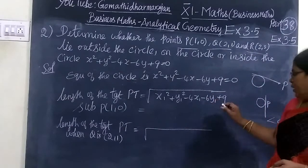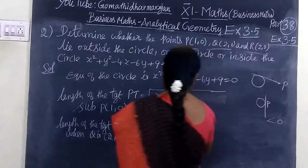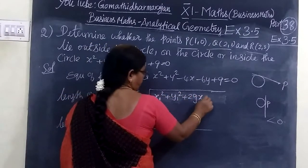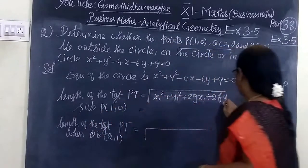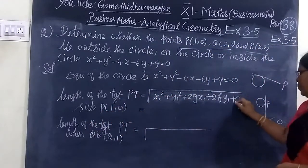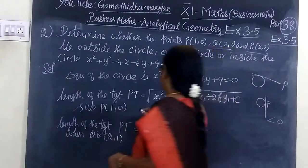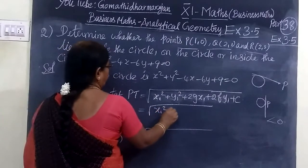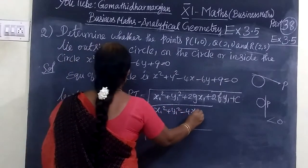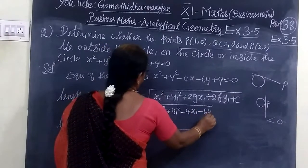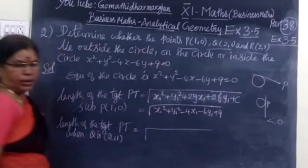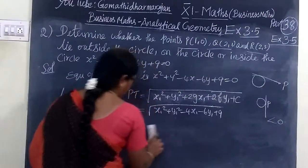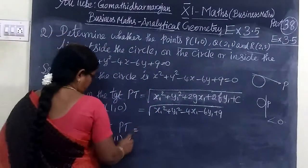We are going to substitute values into the formula. Root of x1 square plus y1 square plus 2G x1 plus 2F y1 plus C. Here we are substituting. The equation is x1 square plus y1 square minus 4x1 minus 6y1 plus 9. For x1 and y1, we will take the point P.